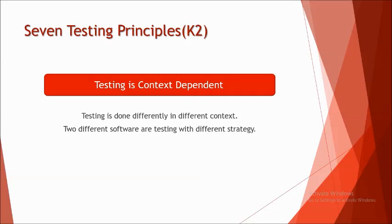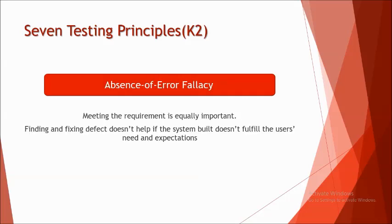Last but not the least, we have the seventh principle called absence of error fallacy. This term stands for itself where it says that at the end, no matter you follow all the principles, you would have tested a lot of defects and fixed them. But in case it doesn't meet the requirement because the primary objective of testing is also to make sure that you are fulfilling the requirements and the customer needs which you started with.